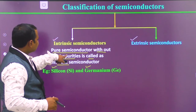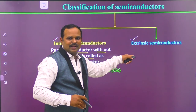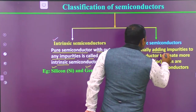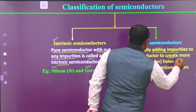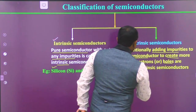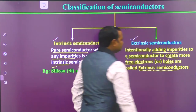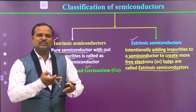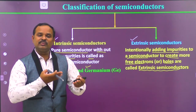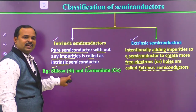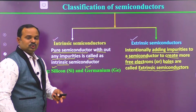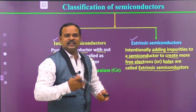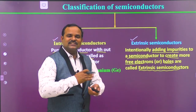Extrinsic semiconductors are formed by intentionally adding impurities to the semiconductor to create more free electrons or holes. We intentionally add impurities like phosphorus, arsenic, antimony, boron, aluminum, or gallium into intrinsic semiconductors like silicon or germanium to get more free electrons so that the semiconductors can conduct electricity more easily. The process of adding impurities is called doping.